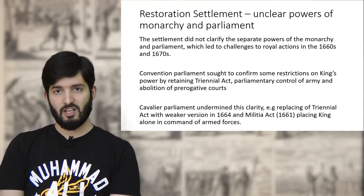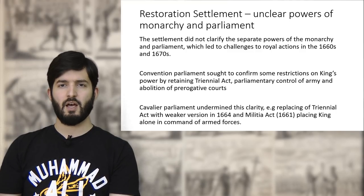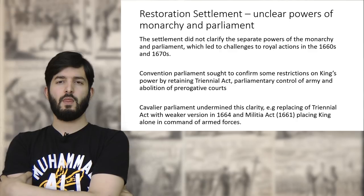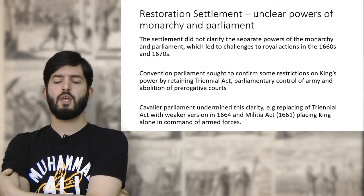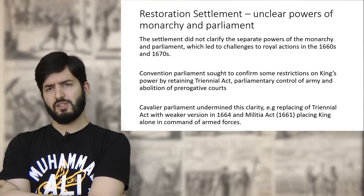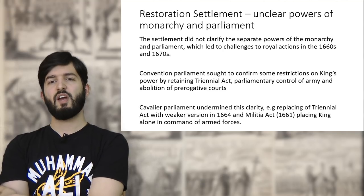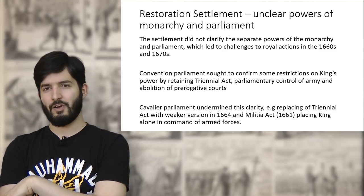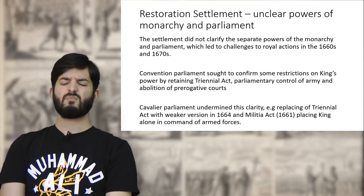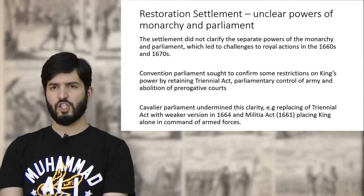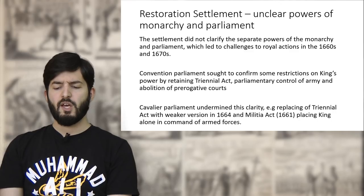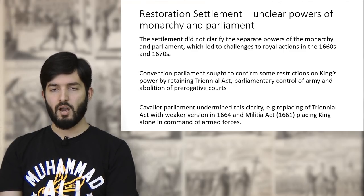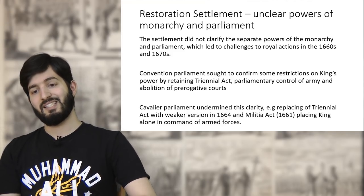We'll start chronologically by considering the Restoration Settlement, because many of the problems that come about afterwards can be traced back to the rather problematic laws passed by the Cavalier Parliament. The first issue is that the Restoration Settlement created a very unclear picture of the powers of the Monarchy and Parliament. This lack of clarity — where one group's power begins and the other ends — often leads to challenges to royal actions in the 1660s and 1670s in particular.